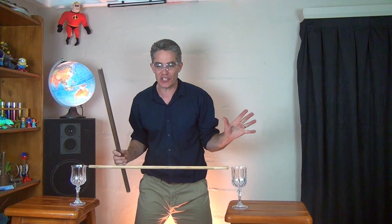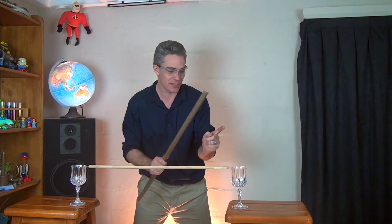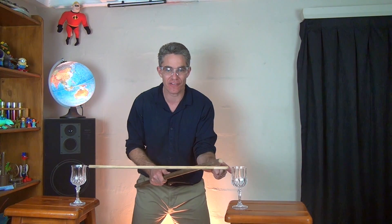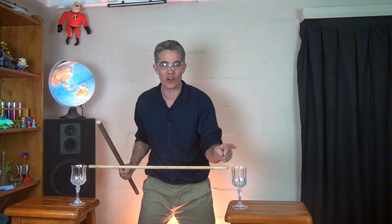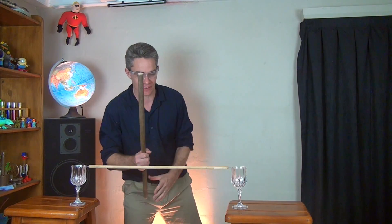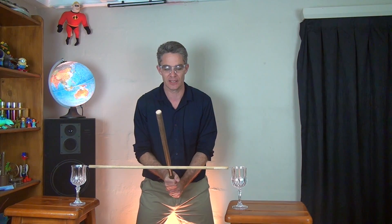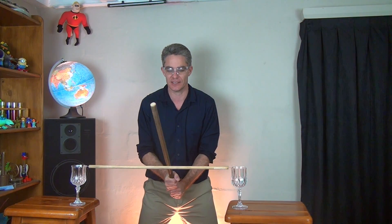One final demonstration. Here we've got a wine glass at rest. Another wine glass at rest. The wine glasses have got a tendency to stay at rest. This rod is at rest. It's got a tendency to stay at rest. I'm going to belt it really hard, really quickly, with this broomstick. Are you ready? Let's see what happens.